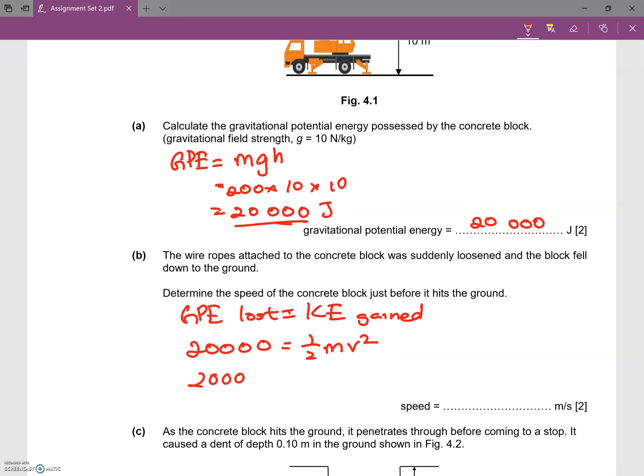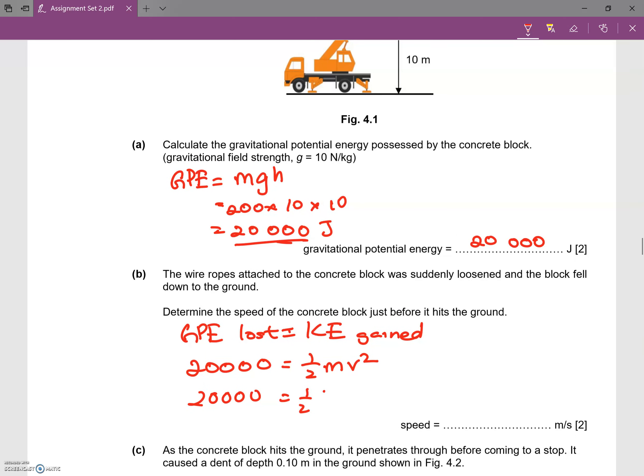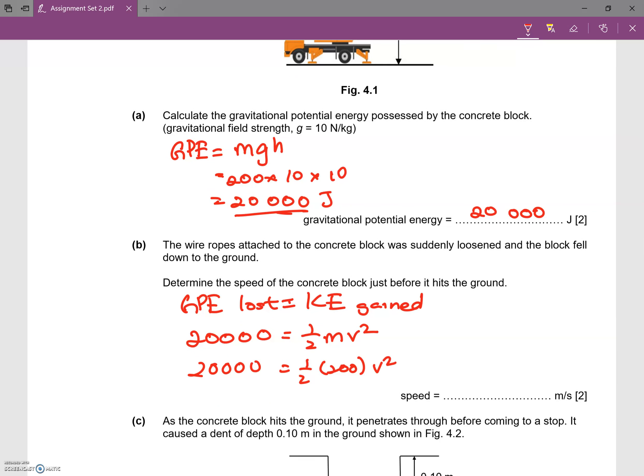So just insert the value here. Half times the mass, mass of the block is 200, times v squared. So v squared equals 200.